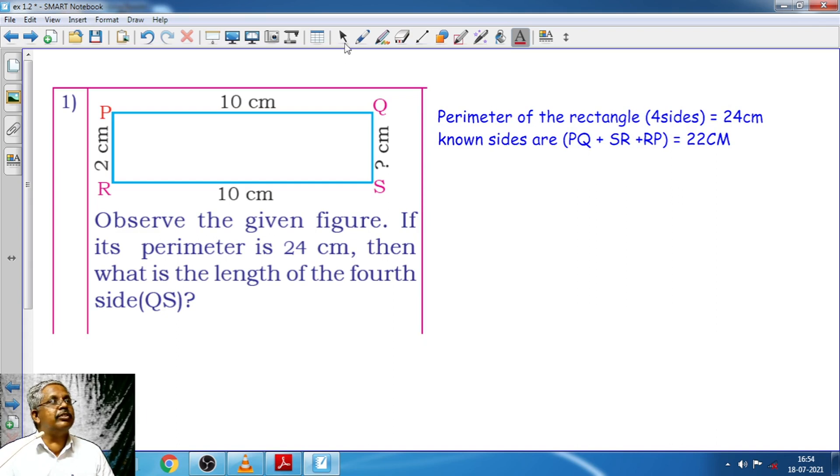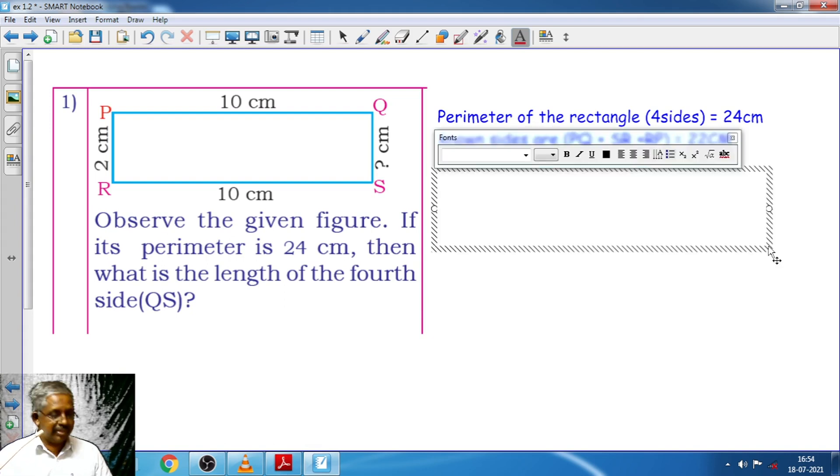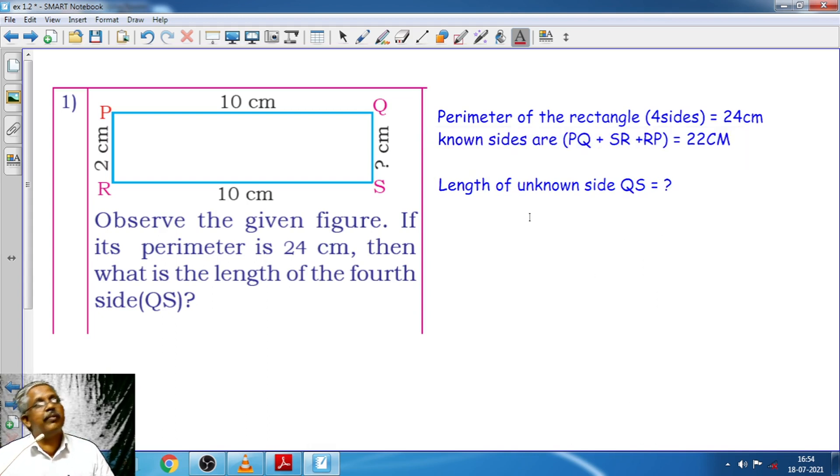And now what am I going to do? I take this one. What is this? Length of unknown side. Here in this case it is QS is equal to how much? This is what is my question. Length of unknown side. But what we have learned in the previous is.